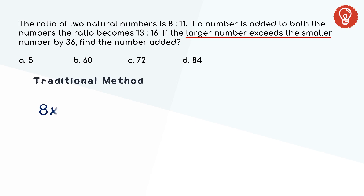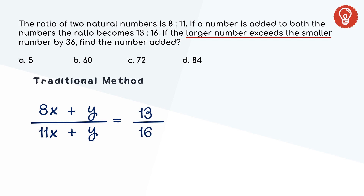Let the two numbers be 8x and 11x. When a number is added to both sides of a ratio, we don't know what that number is — let's assume it to be y. Then the ratio becomes 13 to 16. There is another condition: the difference between the numbers is 36. Now that we have two equations and two variables we can solve them, but this takes a lot of time. So we do not follow this method.